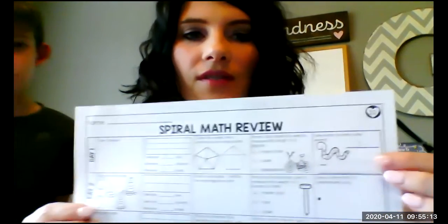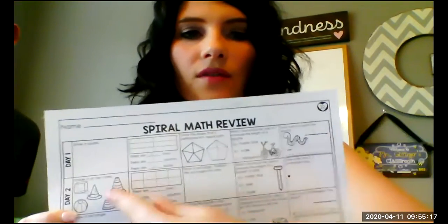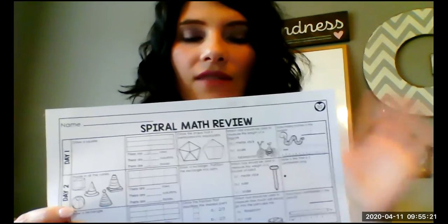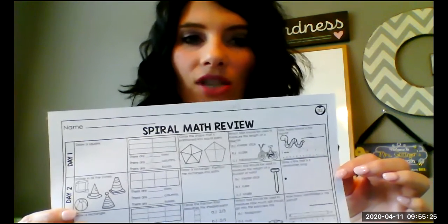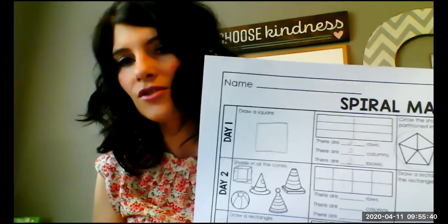So on day one spiral review, you see right here it says draw a square. A square of course has four sides and it looks just like a box. It's a flat shape because we're only doing a two-dimensional shape, so it's flat. On the first box, we need to draw a square — it'll look just like that.